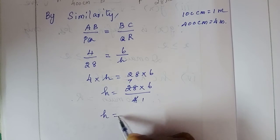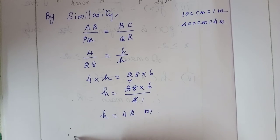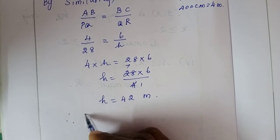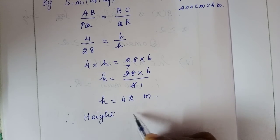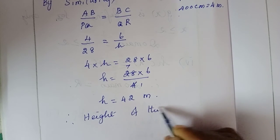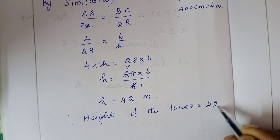Therefore h is equal to 7 times 6, which is 42 meter. Therefore, height of the tower is equal to 42 meter.